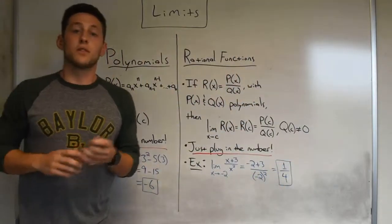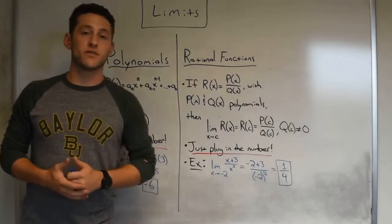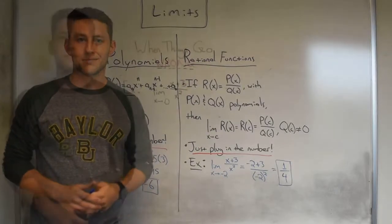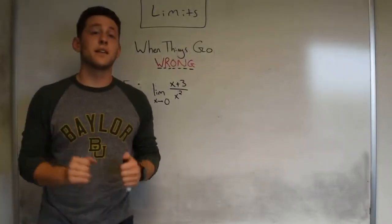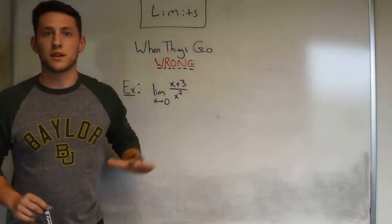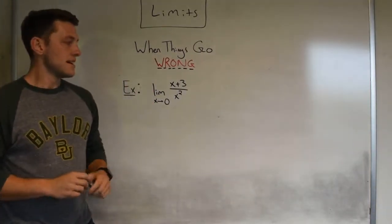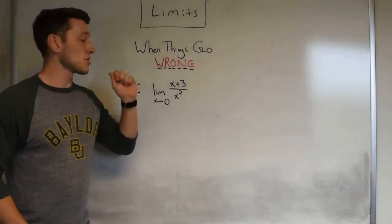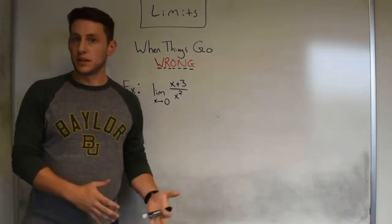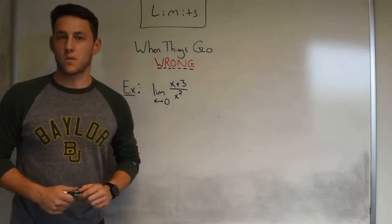So these are our first rules: given that we're only looking at these two types of functions, just plug in the number. Now that we've covered our general rule, let's talk about when things go wrong with limits. In order to do this, let's use our rational function from a little bit ago — the function (x + 3) divided by x squared — and evaluate the limit as x approaches zero.